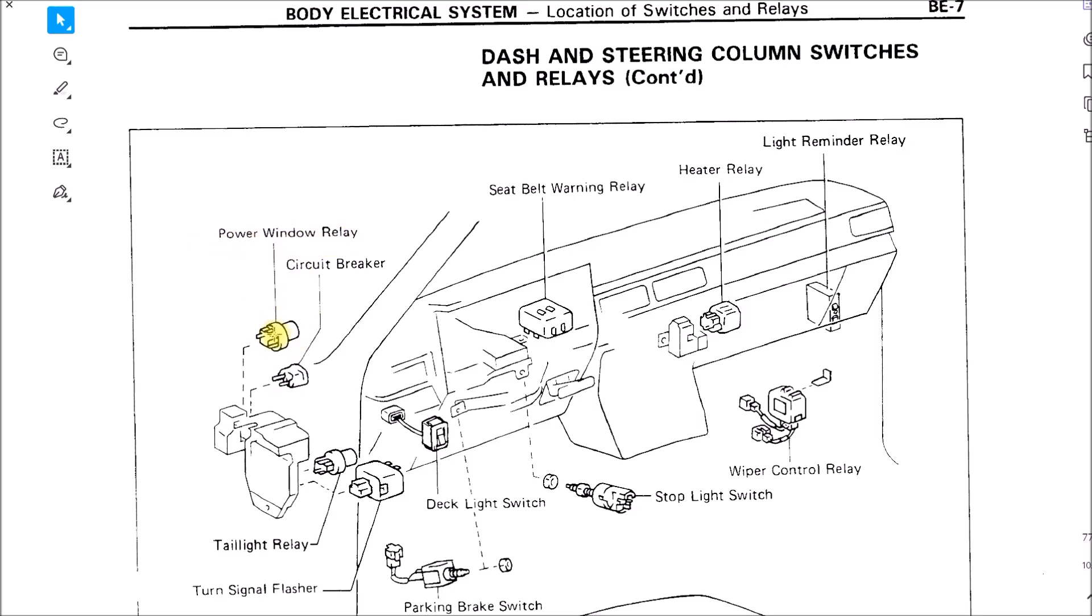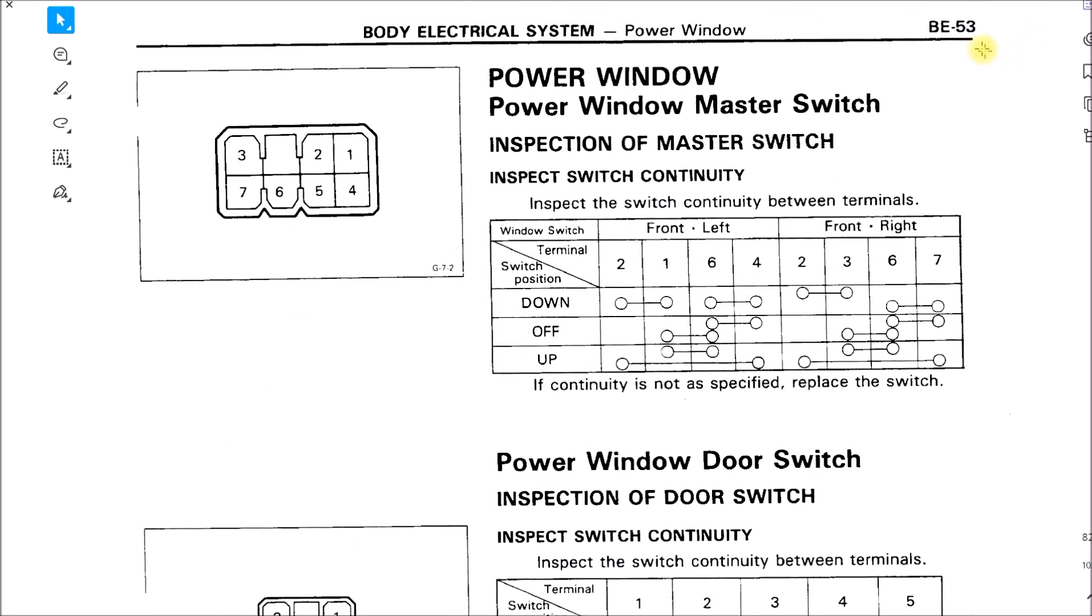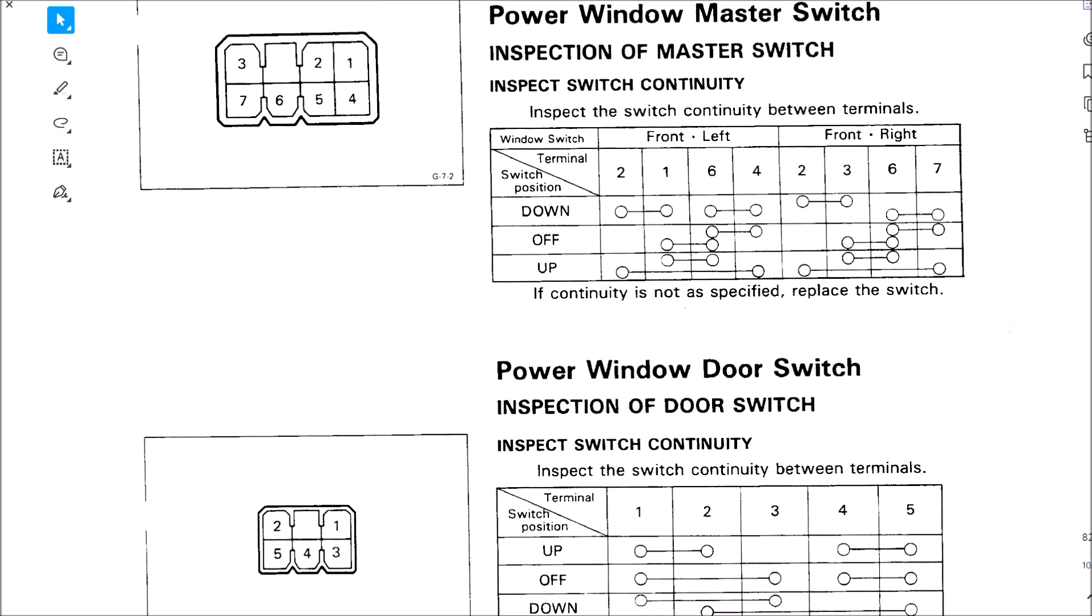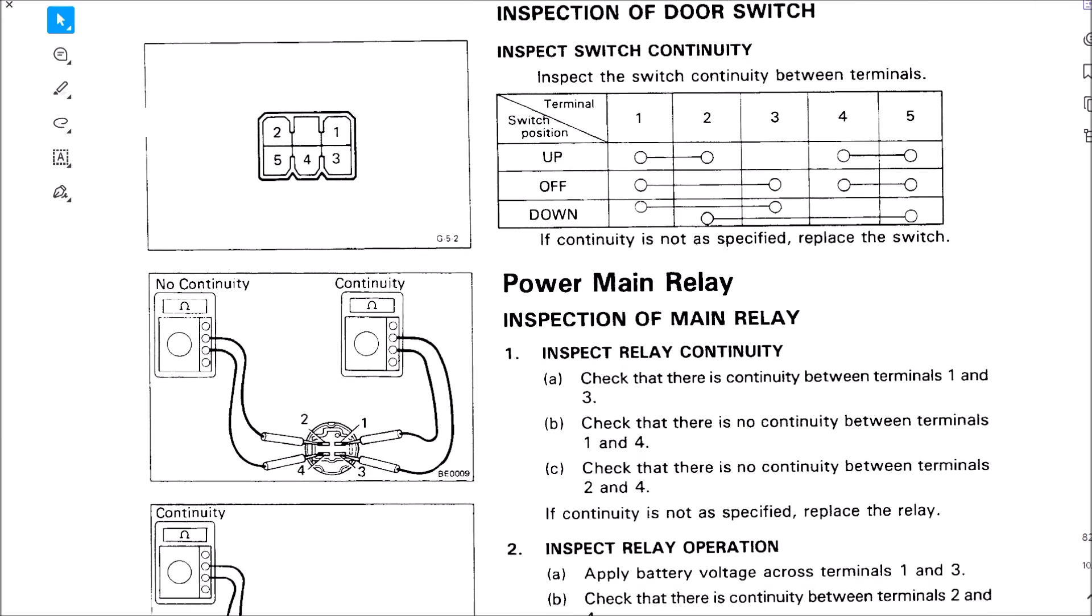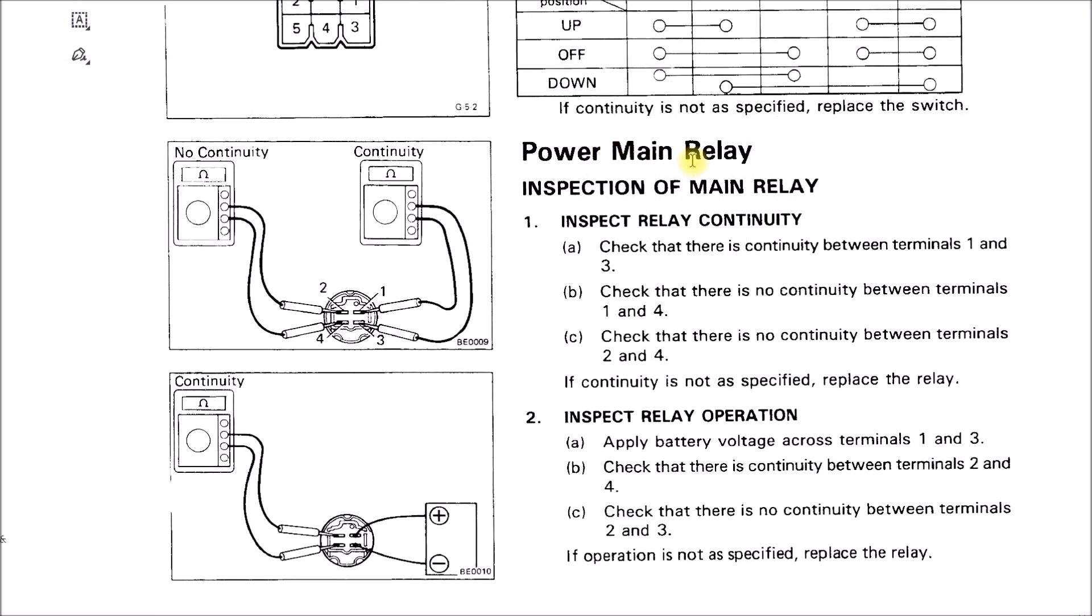This is the power window section and they have all the pin outs. There's the power window switch, this is the door switch here. They call it the power main relay, but on the previous diagram they called it the power window relay.